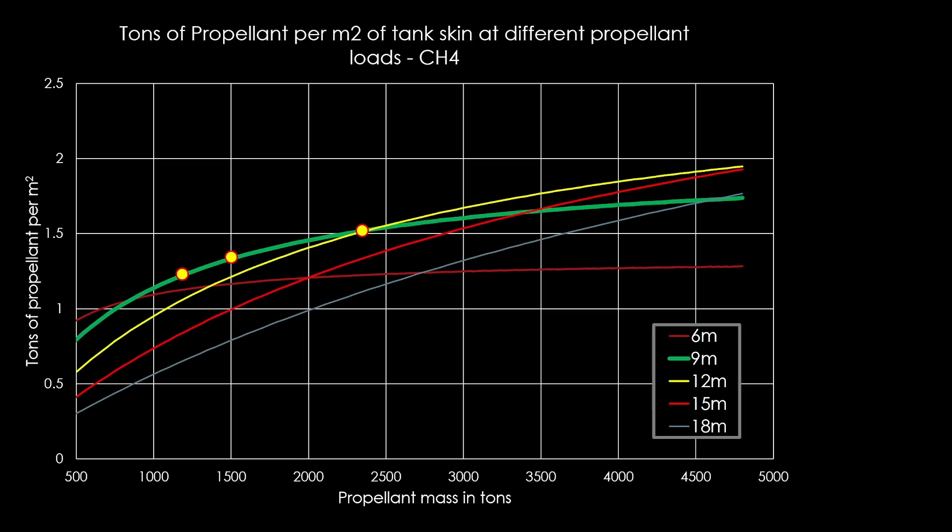You can still get gains at 9 meters and higher propellant amounts, but you would be better with a bigger rocket. The other thing to notice is that as you increase propellant, a large diameter becomes a better choice at a specific propellant range. I'm a bit surprised to find that 12 meters is still the best choice even if you go up to 4,800 tons of propellant, which is four times what Starship currently carries. That is a much bigger rocket.